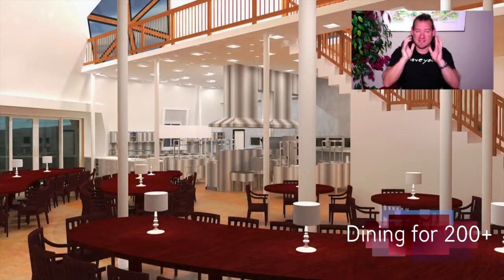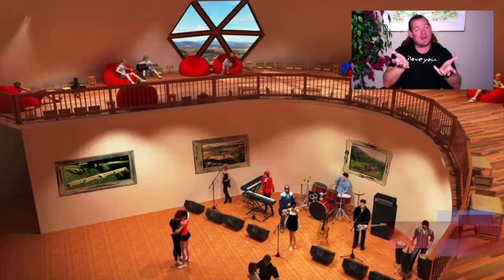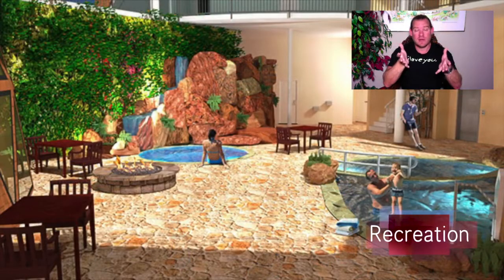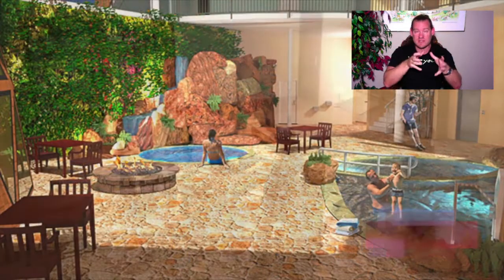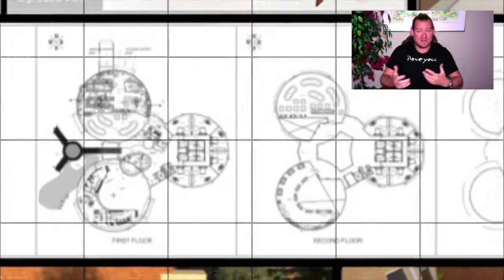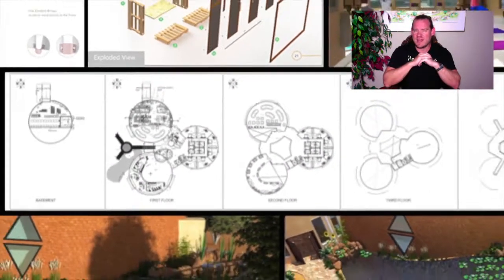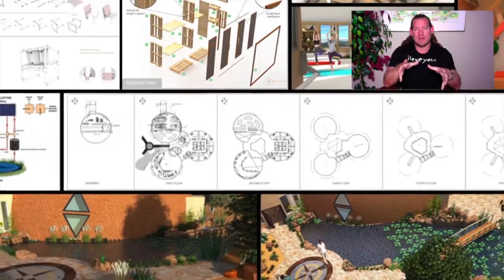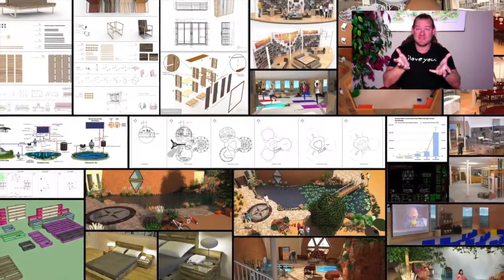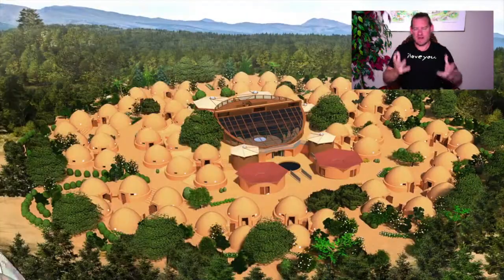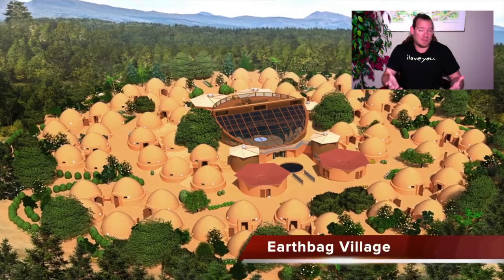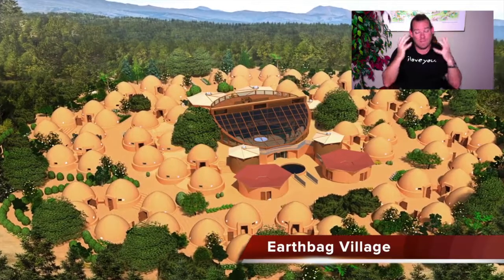Today's topic is the Science of Sustainable Ecology. Sustainable ecology, for One Community, is about the ecology of humans in relationship to their environment. Ecology is normally organisms in relationship to their environment, and we're focused on what would be the science of creating sustainable environments that people would prefer to live in versus the way that they're living right now.